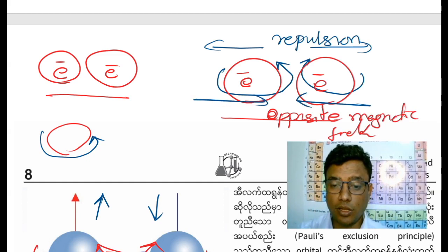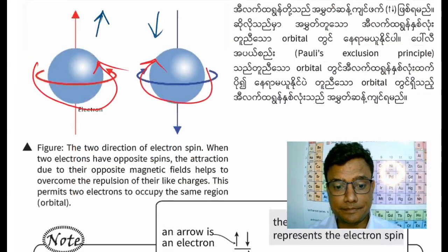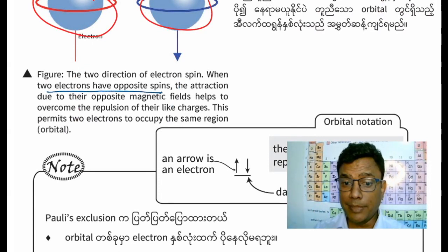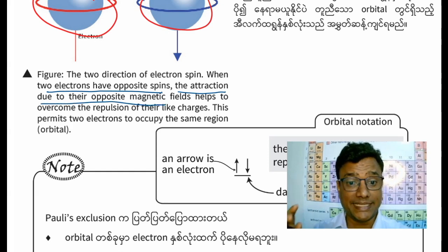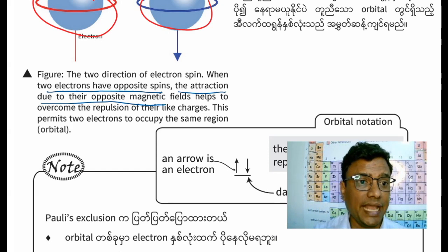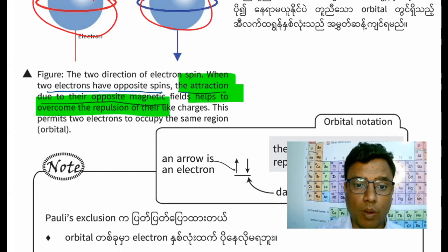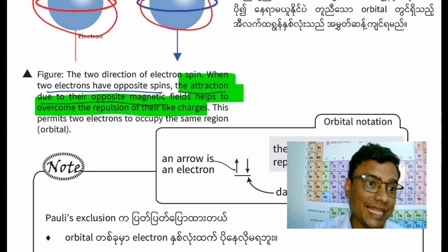Two electrons with opposite spin have an attraction due to their opposite magnetic fields. This attraction helps overcome the repulsion of their like charges.